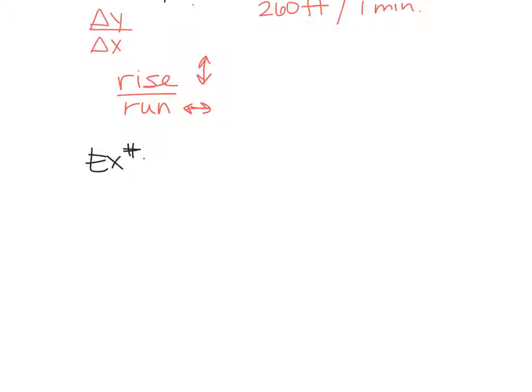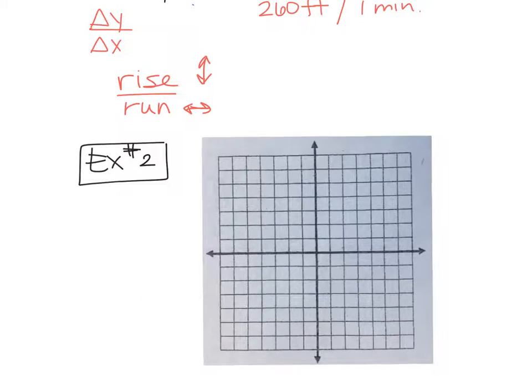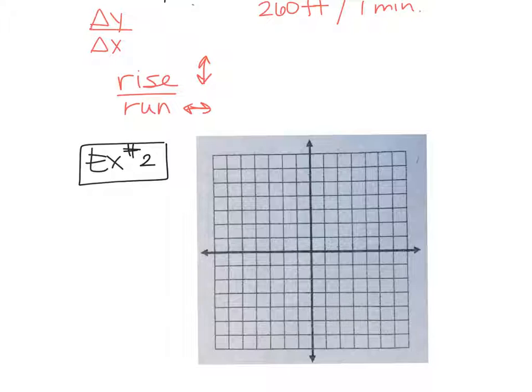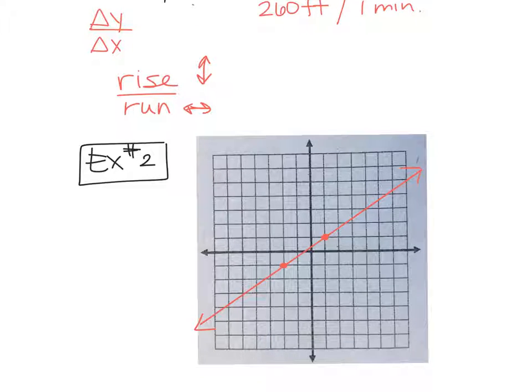So we're going to find the slope of a couple lines and then we'll get more into the slope details down the road. But what we're going to do today is this. Example two. Let's say you have a graph and I give you a point at negative two, negative one, and another point at one, one, and then our line is here.